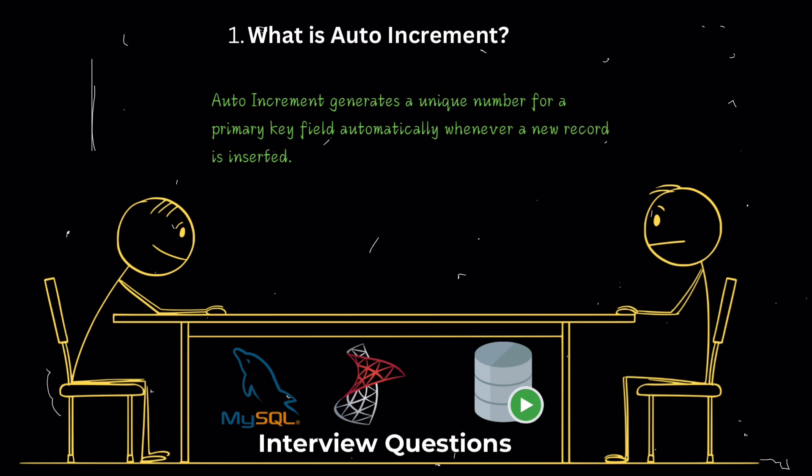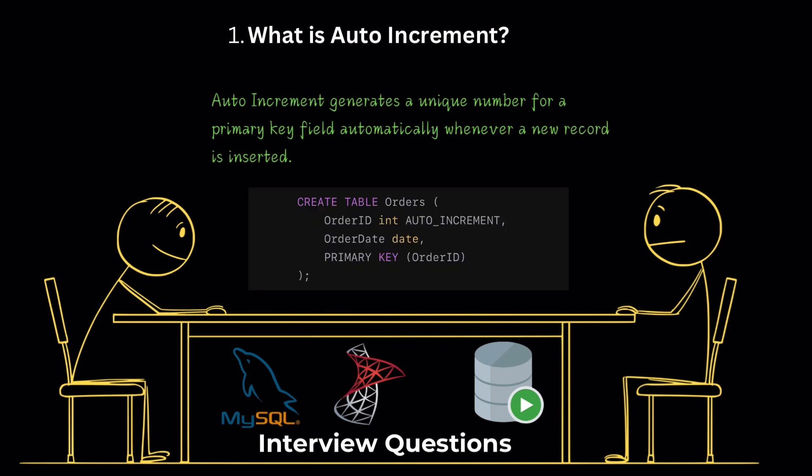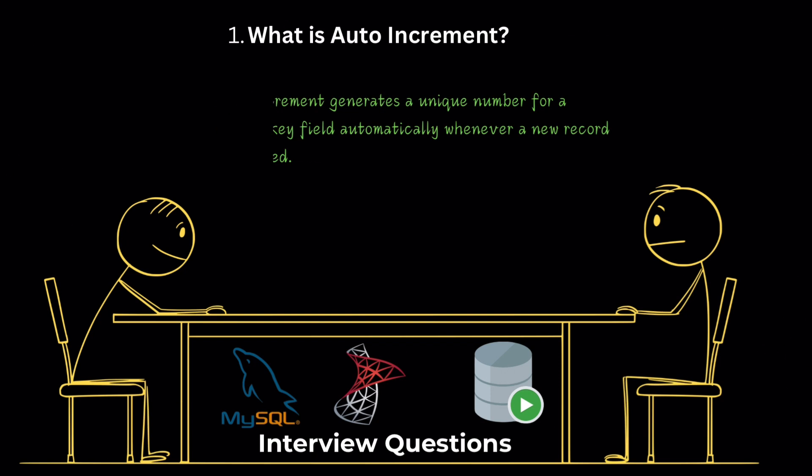What is auto increment? Auto increment is a feature in SQL that automatically generates a unique number for a primary key field whenever a new record is inserted. This is useful for creating unique identifiers without manual input.